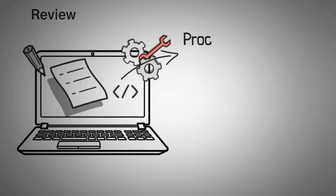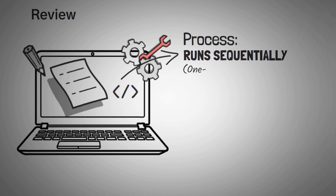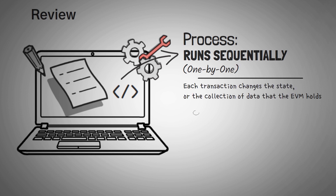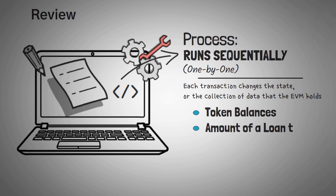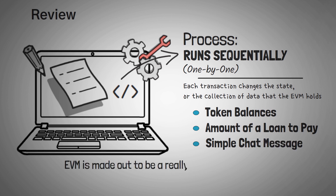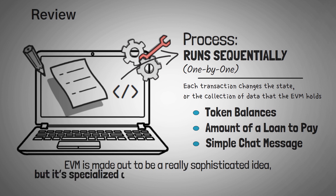When transactions are submitted to be processed by the EVM, they are run sequentially, one by one, and each transaction changes the state — the collection of data that the EVM holds. This data could be token balances, or maybe an amount of a loan to repay, or even a simple chat message. Overall, the EVM is made out to be a really sophisticated idea, but essentially it's just a specialized computer that's designed to process DeFi transactions.